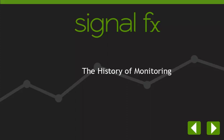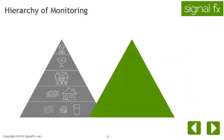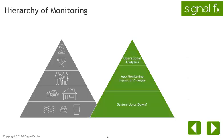Software systems and applications have evolved a lot in the past few decades. In this module, we look at how monitoring those systems has also changed. Similar to Maslow's hierarchy of needs, we can define a hierarchy of monitoring needs.